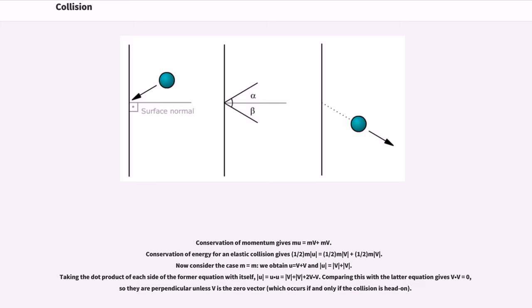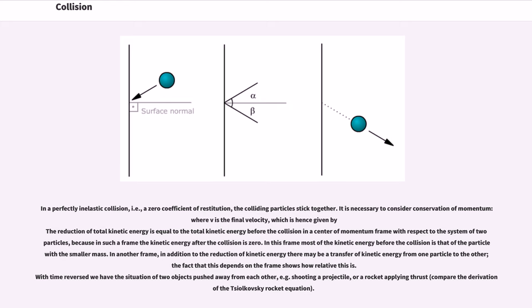Taking the dot product of each side of the former equation with itself, |u₁|² = u₁·u₁ = |v₁|² + |v₂|² + 2v₁·v₂. Comparing this with the latter equation gives v₁·v₂ = 0, so they are perpendicular unless v₂ is the zero vector.